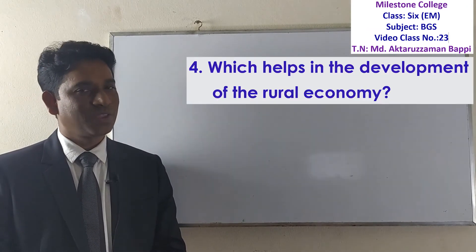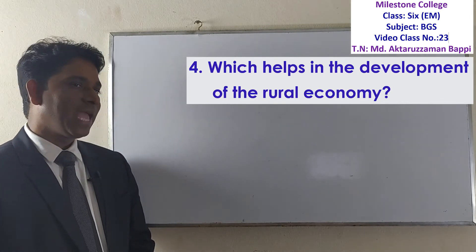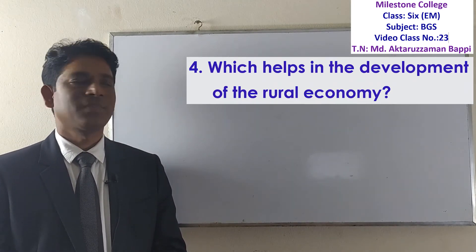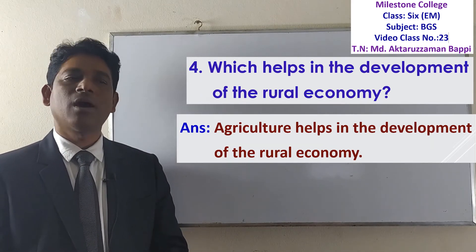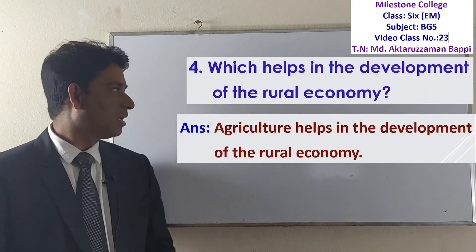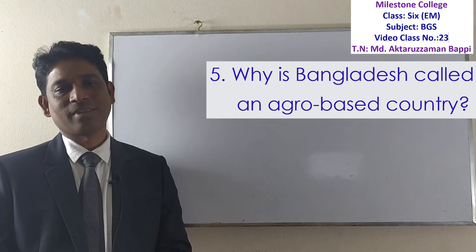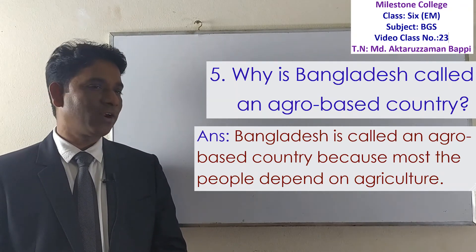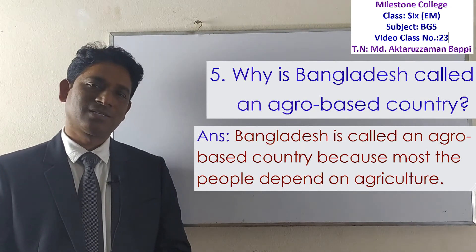Question number 4: which helps in the development of the rural economy? The answer is: agriculture helps in the development of the rural economy. Last question: why is Bangladesh called an agro-based country? The answer is: Bangladesh is called an agro-based country because most of the people depend on agriculture.